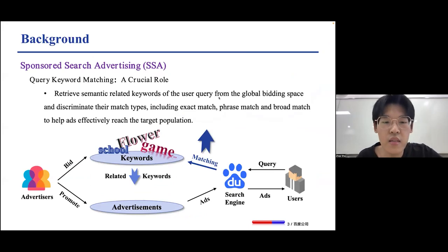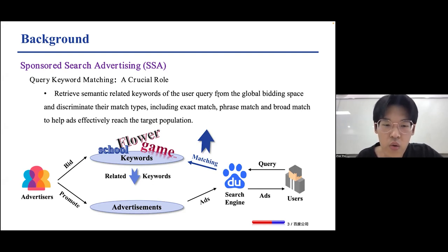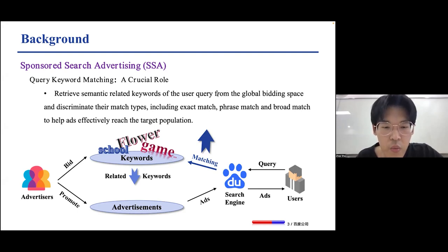Sponsored Search Advertising has gained widespread recognition as a prominent digital advertising channel due to its ability to effectively target user search queries and achieve much higher conversion rates. In SSA, advertisers bid on search keywords related to their products or services to better target and promote their advertisements. When users perform search queries, the search engine retrieves relevant keywords in real-time and matches them to appropriate ads for recommendation.